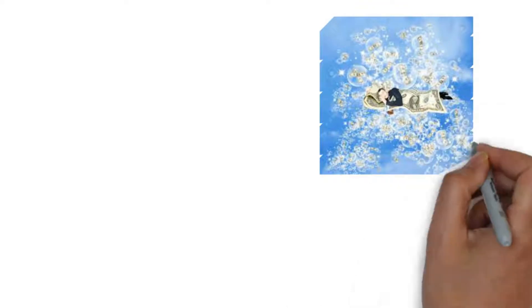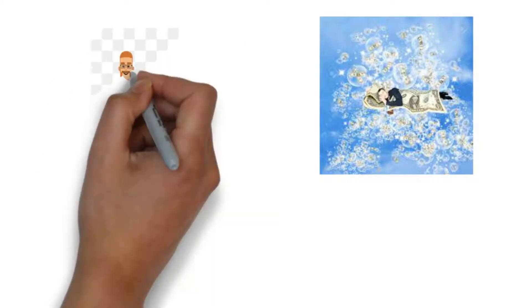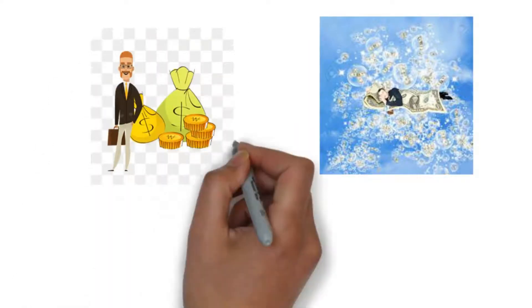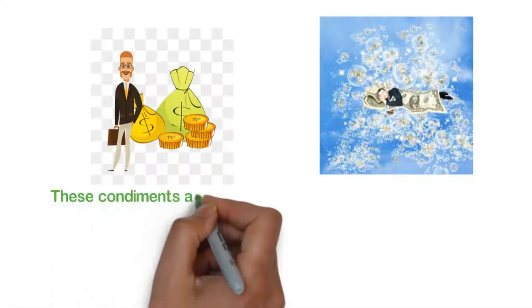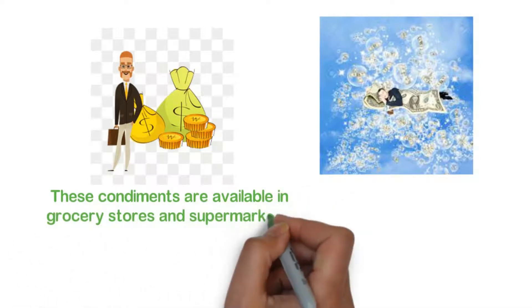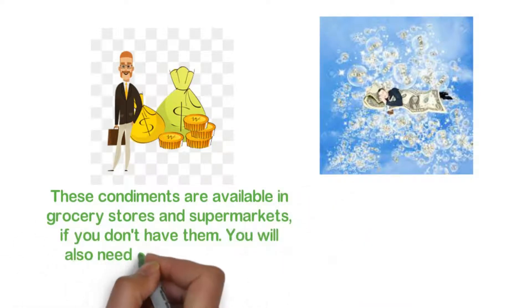Psychics and white magic professionals call it cloves. Astrological supports are essential to perform the ritual. Among the basic elements are two cloves, available in grocery stores and supermarkets. You will also need a magnetized green candle and a candle holder.